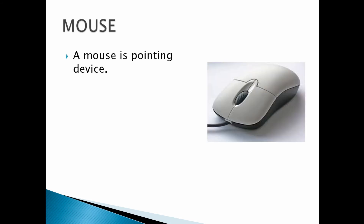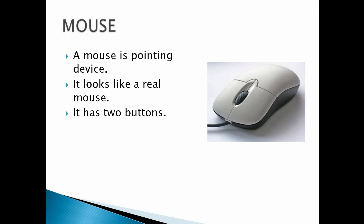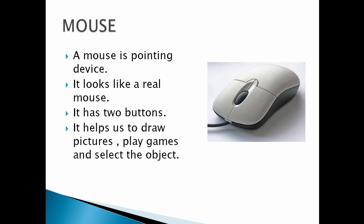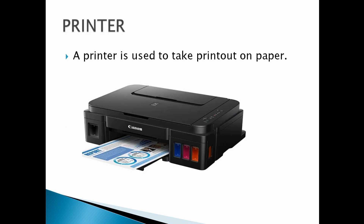The next part is mouse. This is the diagram of mouse. A mouse is a pointing device. It looks like a real mouse. It has two buttons. It helps us to draw pictures, play games and select the object.